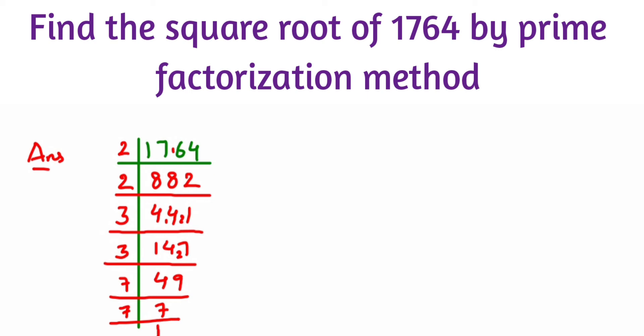So we'll just rewrite this one. 1764 is equal to 2 times 2 and again 3 times 3 and again 7 times 7. Again, so in this method, we'll start pairing up the factors. So this is forming a one pair, this is second pair, and this is one more pair.